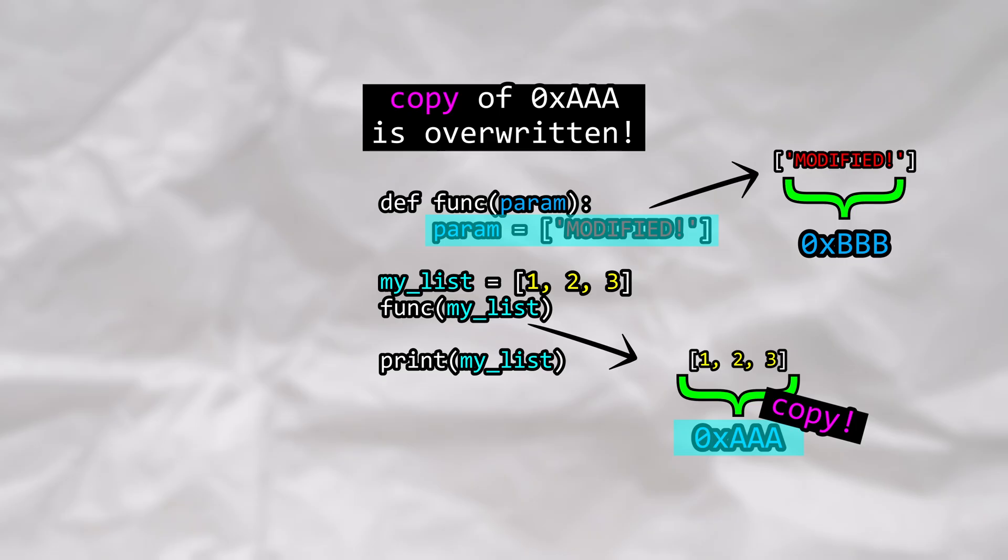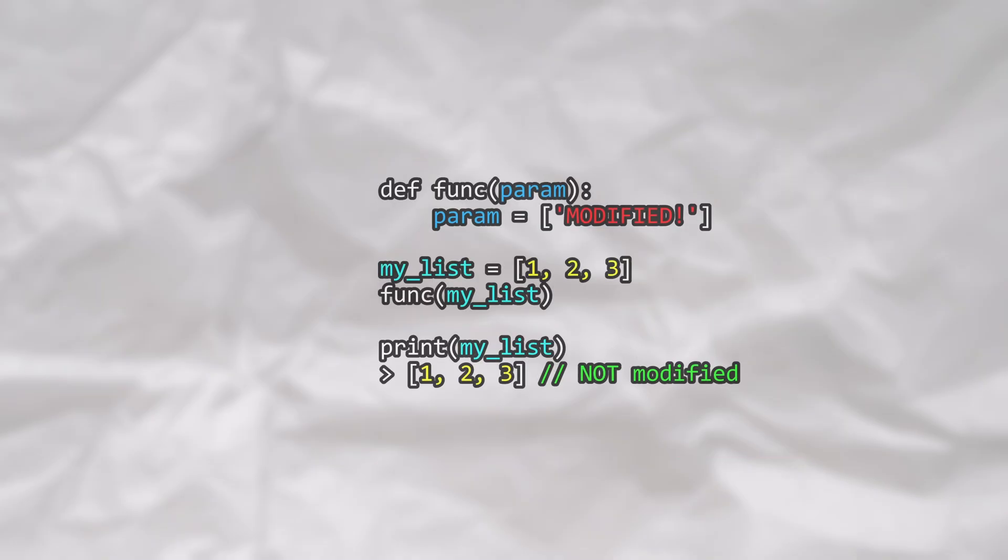Now, when we run our function, despite having it seem like we're modifying the myList variable, we're actually only modifying a copy of it. As expected, the original myList variable remains unchanged in this case.